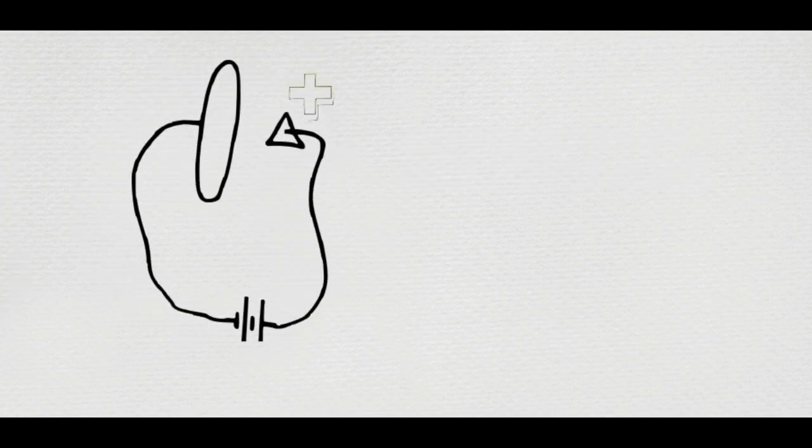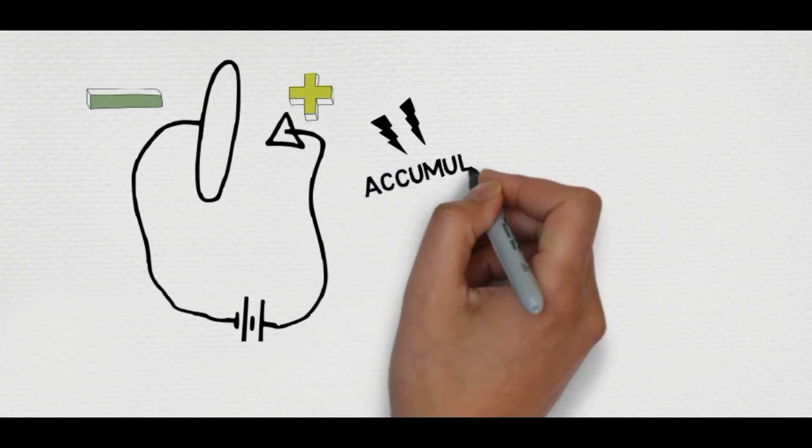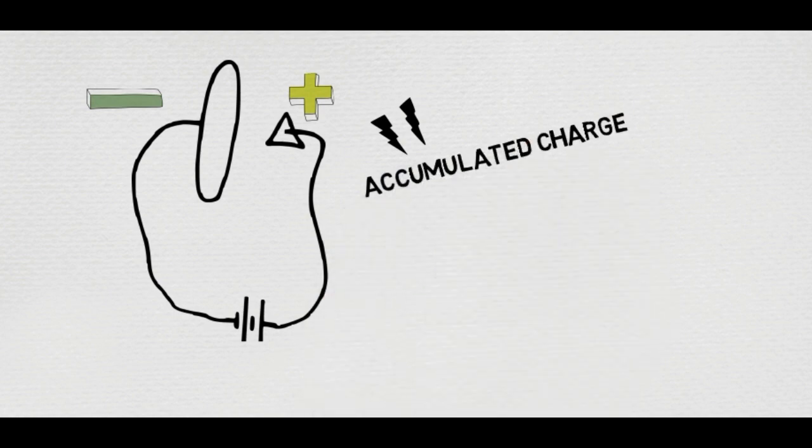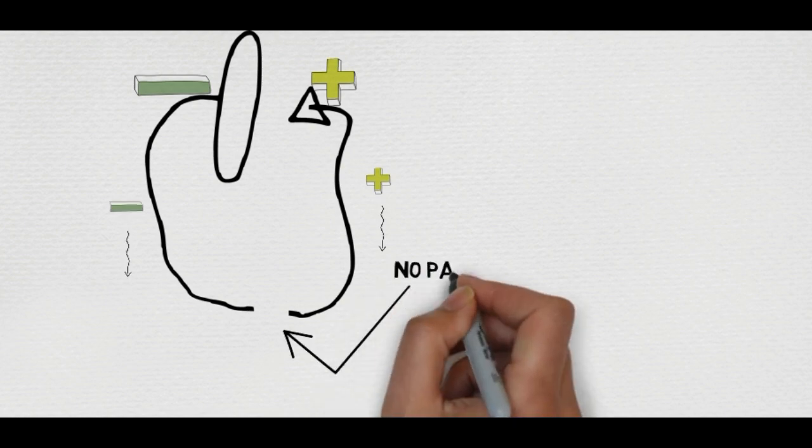Once this happens, the process stops and the accumulated charge just sits there on the piece of metal. The negatives want to go towards the positive as opposites attract, but there is no path for them to get there.